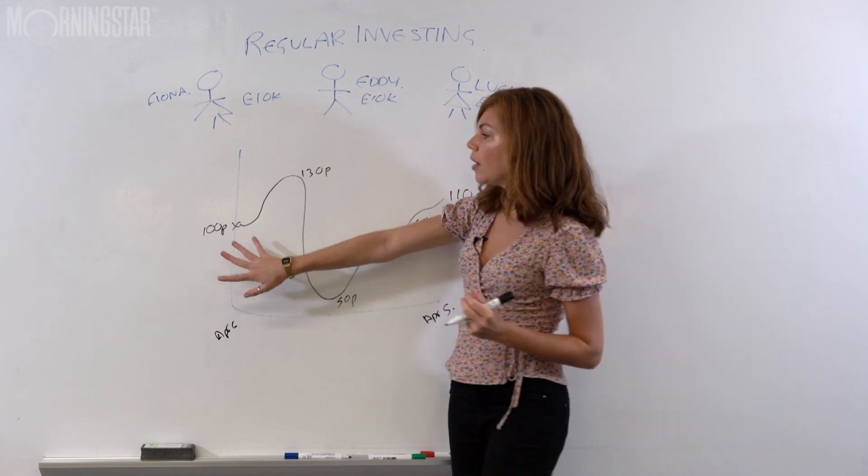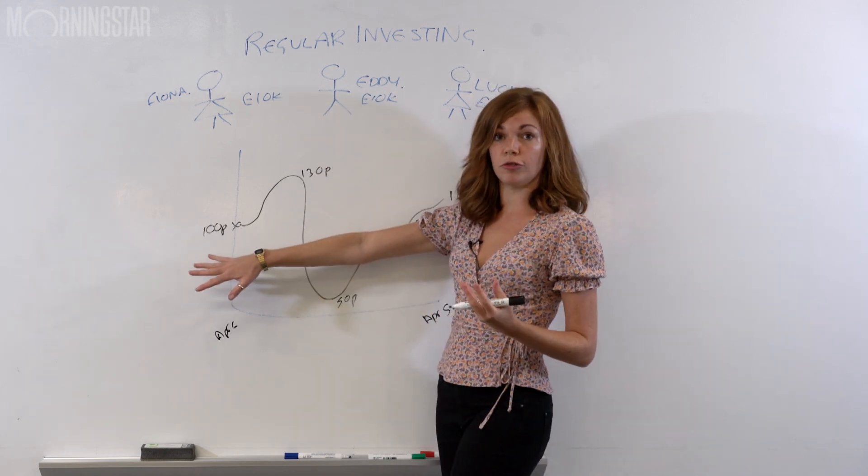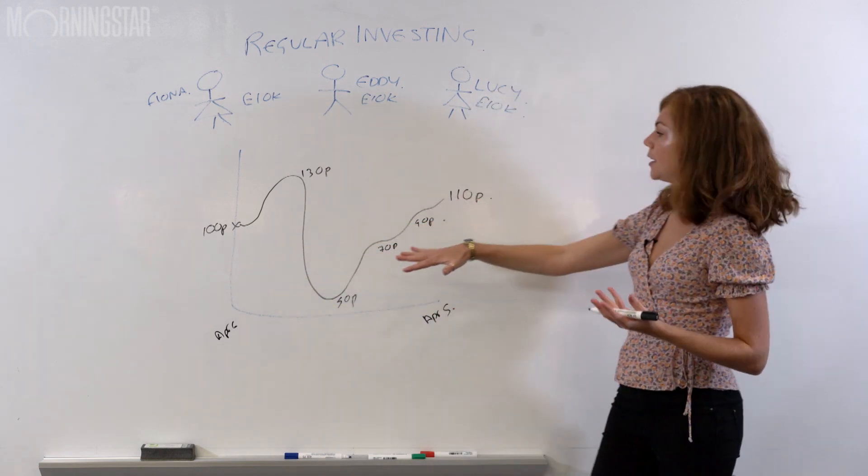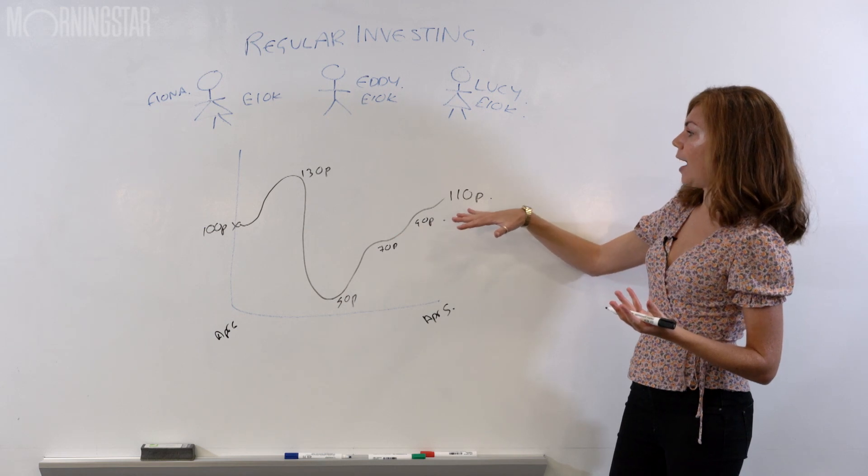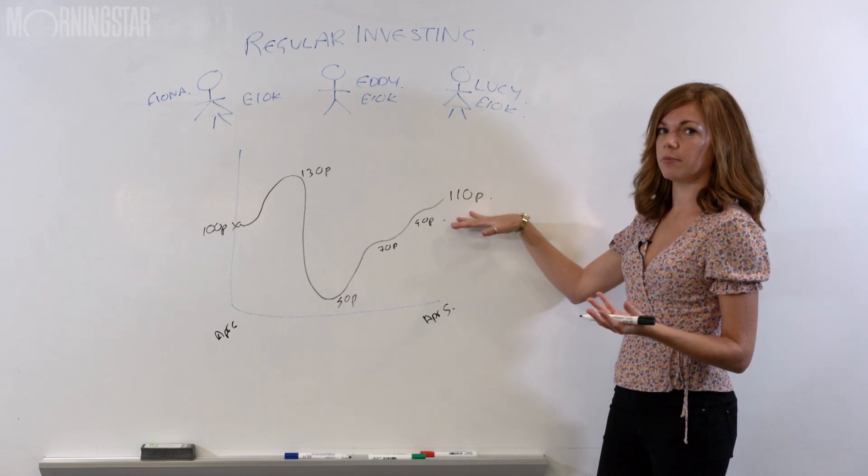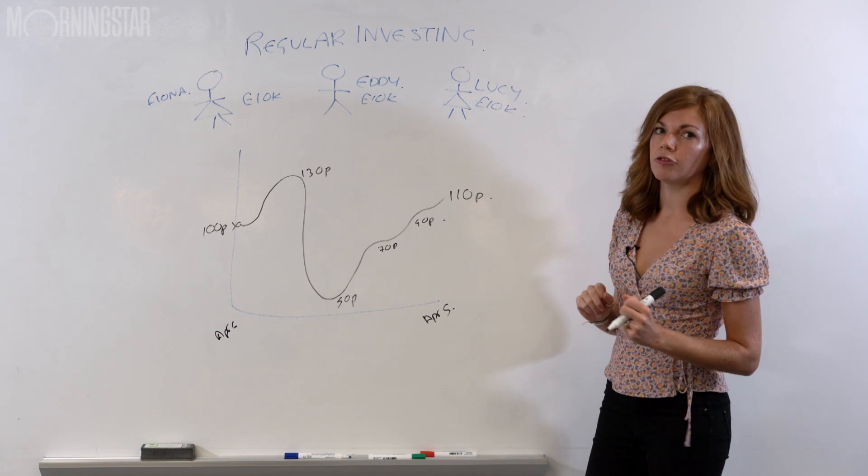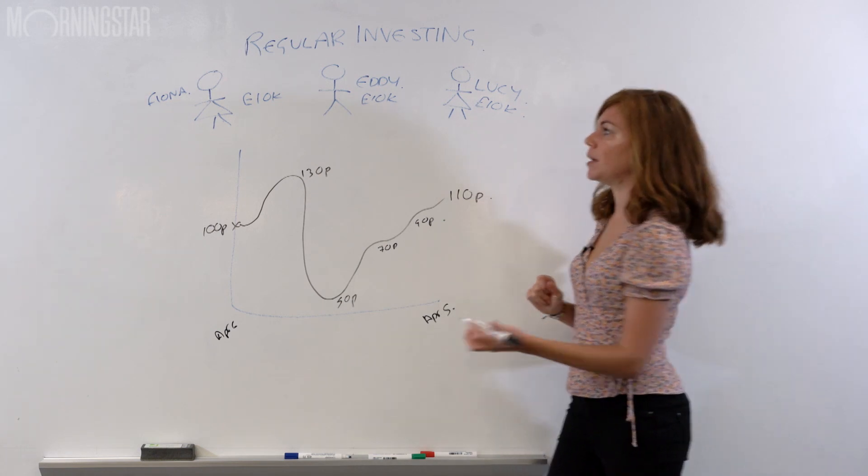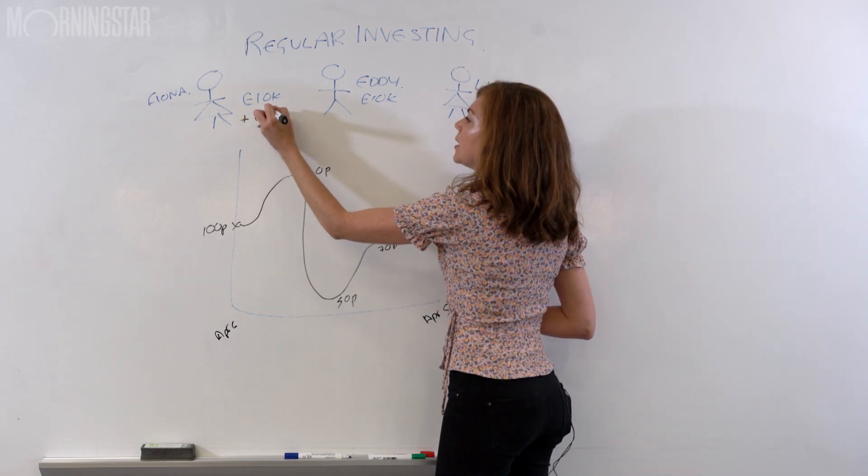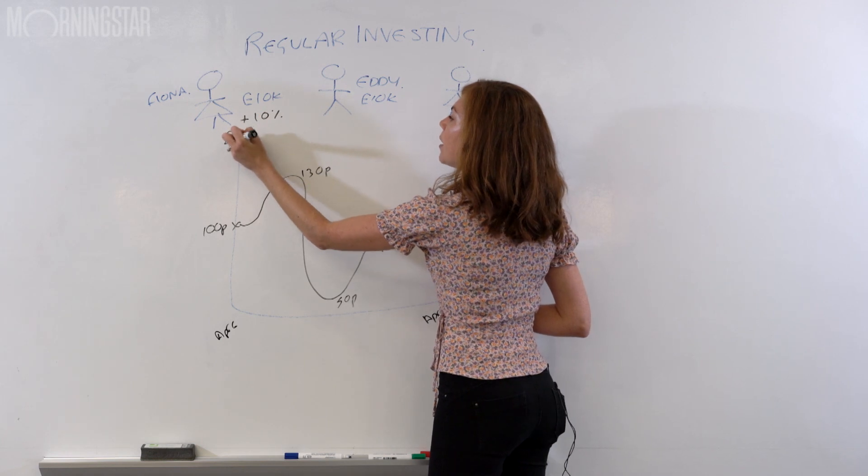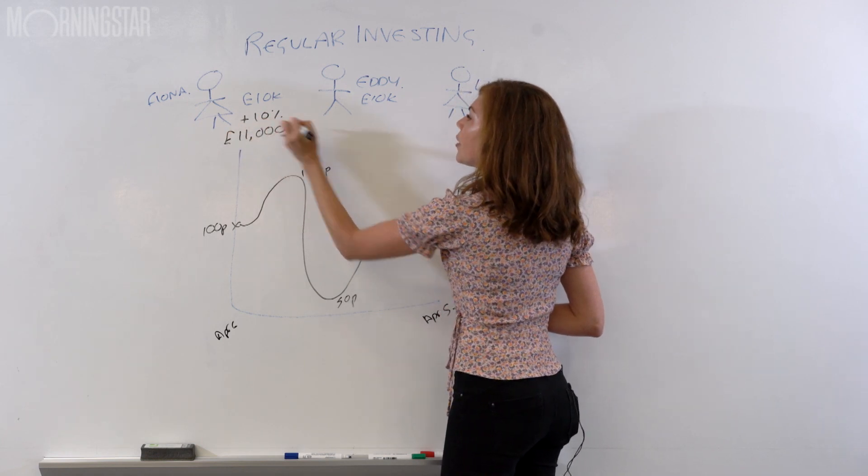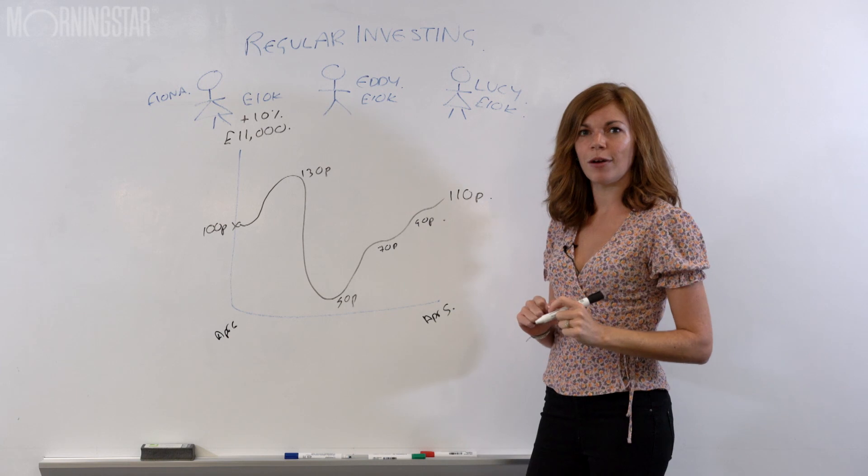First thing Fiona put all of her £10,000 in at 100p and by the end of the year, she had gone up 10% with her investment because that's the difference between 100p and 110p. She's up 10%. She's pretty happy with that, feeling good about life. She's got £11,000 now. More money to invest next year. Well done, Fiona.